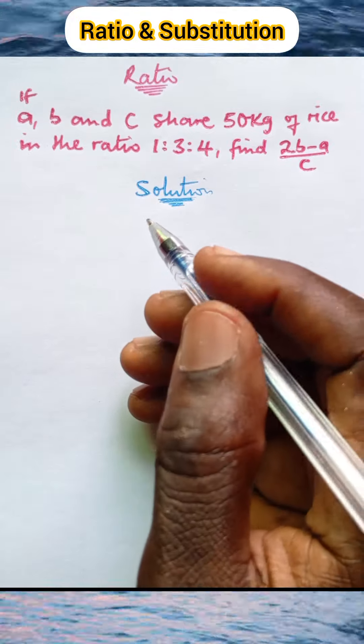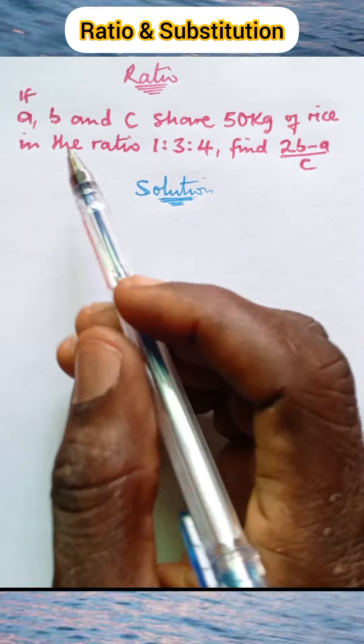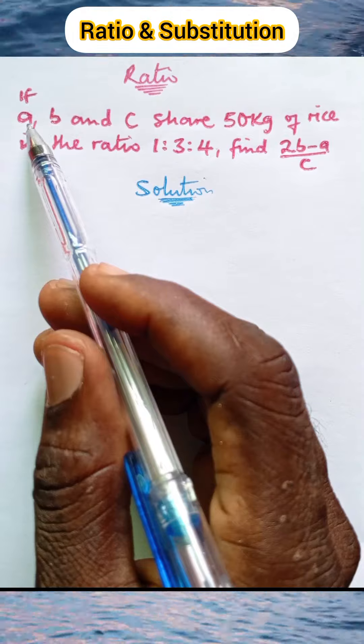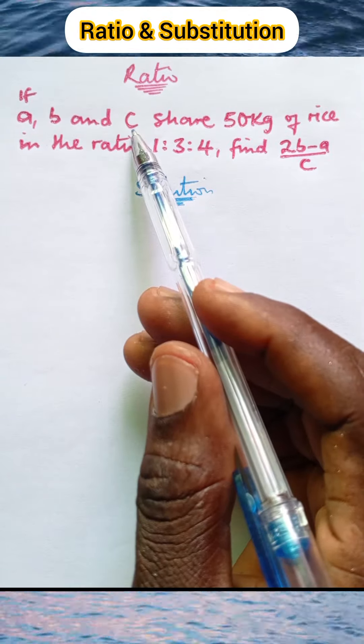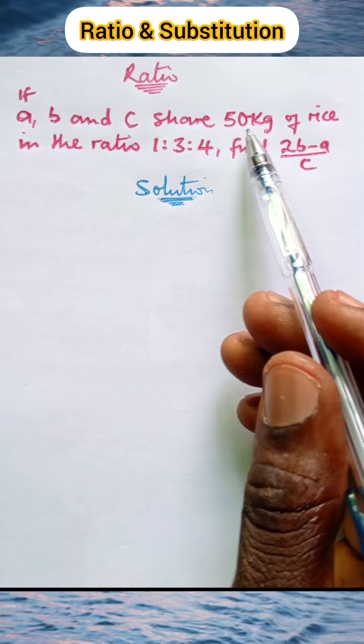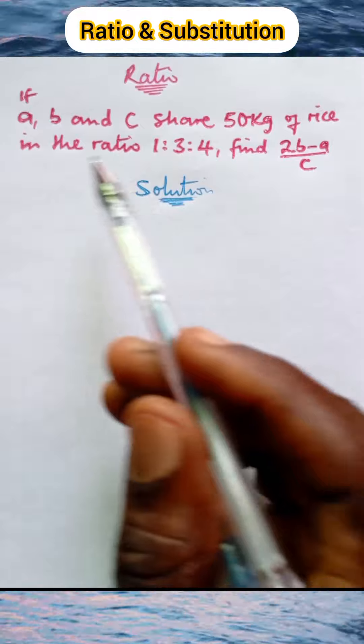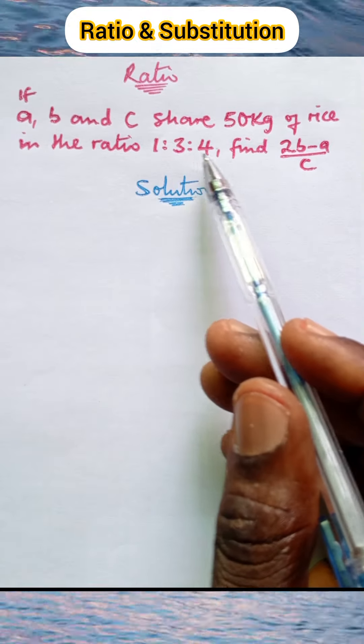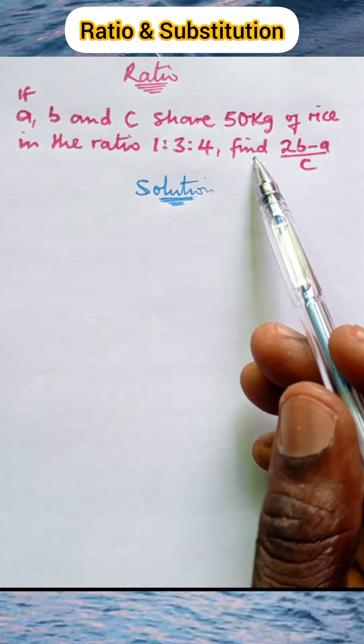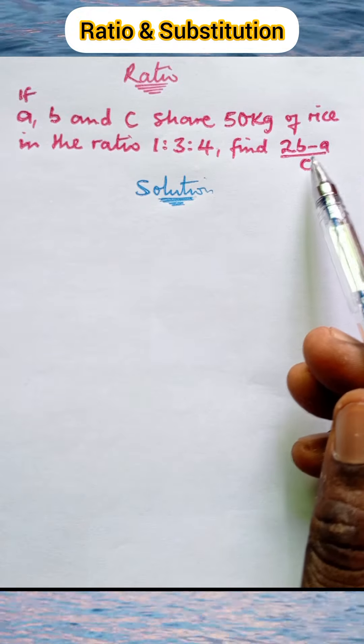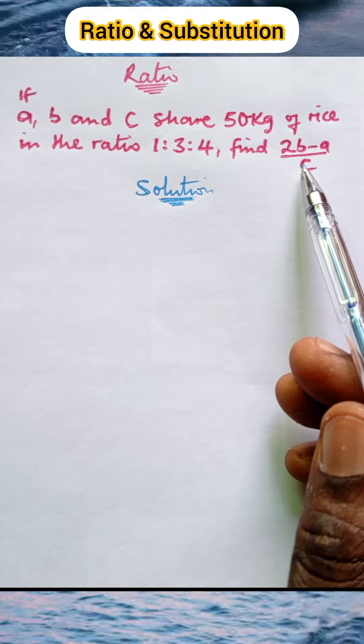Here is a simple question on ratio. The question says: if a, b, and c share 50 kilograms of rice in the ratio 1:3:4, find (2b - a)/c.